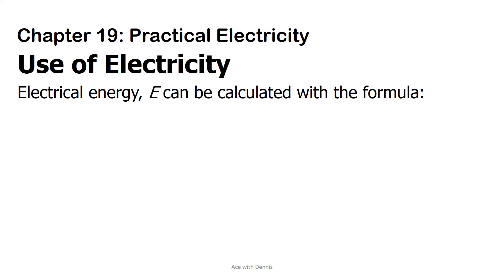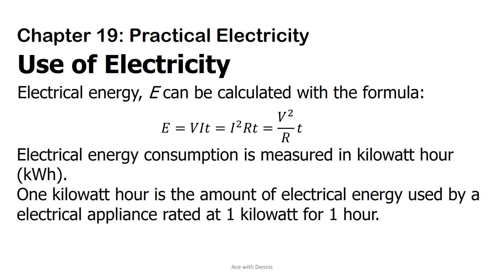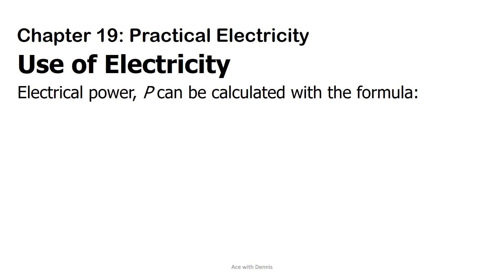Electrical energy E can be calculated with the formula: E equals VIT, equals I²RT, equals V²/R over T. Electrical energy consumption is measured in kilowatt-hour, kWh. One kilowatt-hour is the amount of electrical energy used by an electrical appliance rated at one kilowatt for one hour. Electrical power P can be calculated with the formula: P equals VI, equals I²R, equals V²/R.